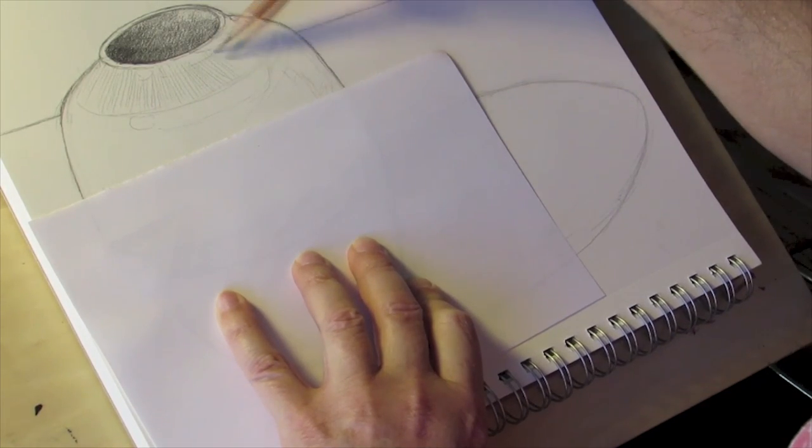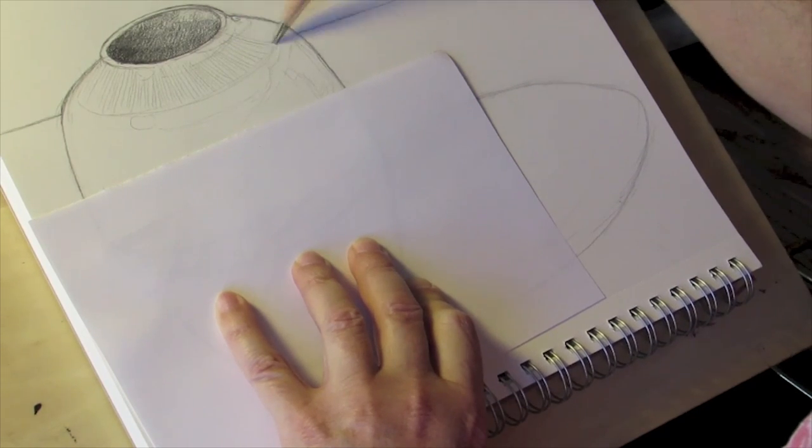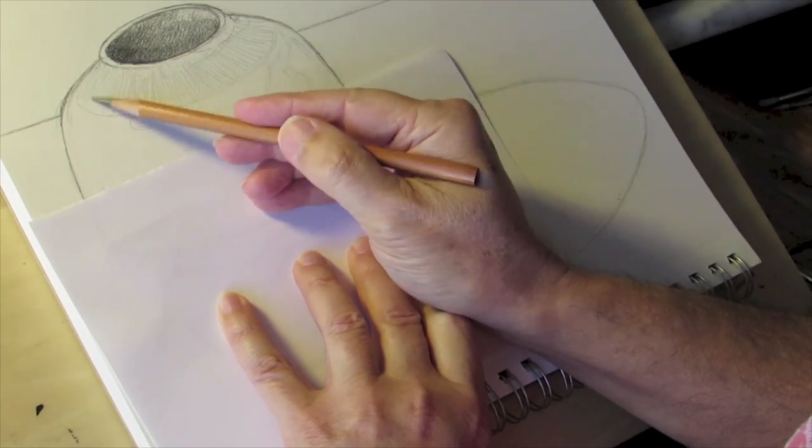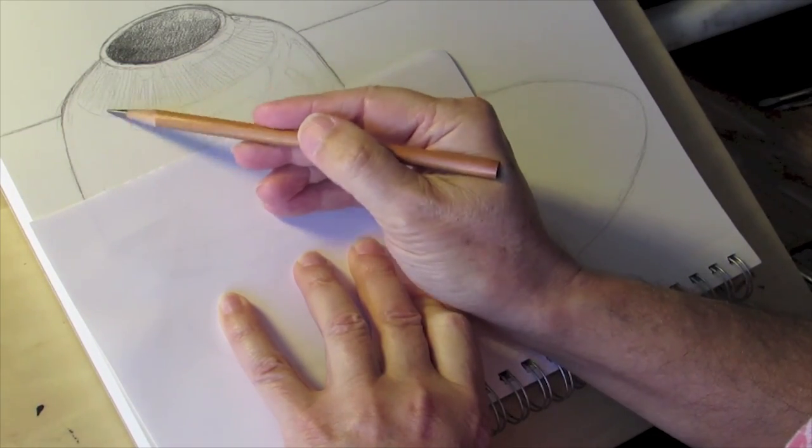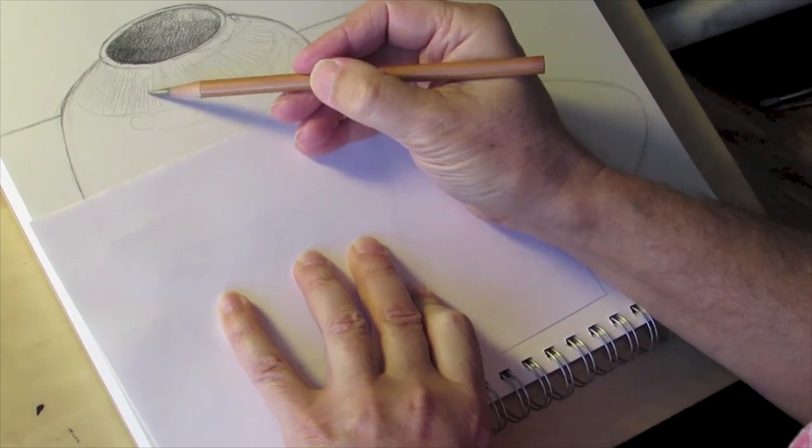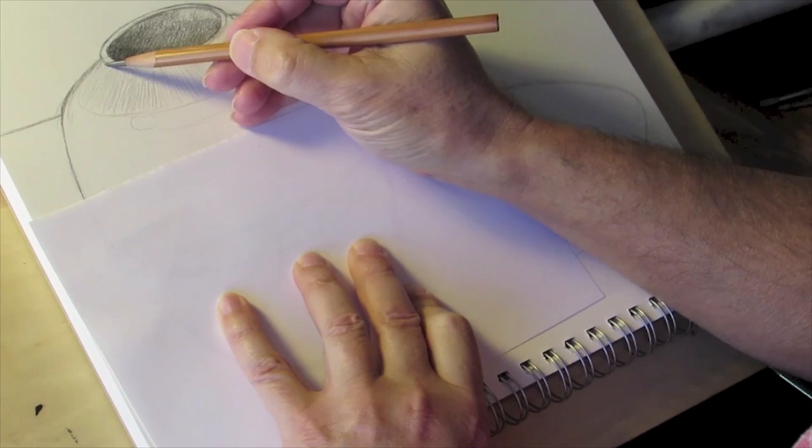You'll also notice that as I introduce this hatching, I'm deliberately changing the direction of that hatching so that if a viewer in my final drawing, if the hatching still appears there, the viewer will understand from the pattern and the direction of that what's happening with the form.